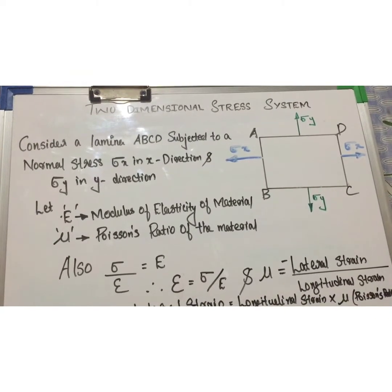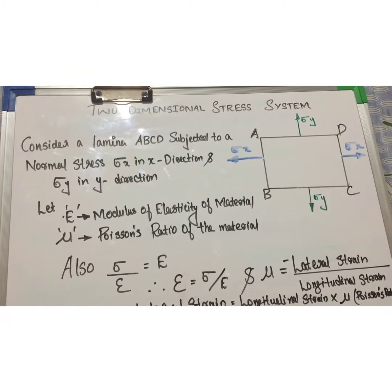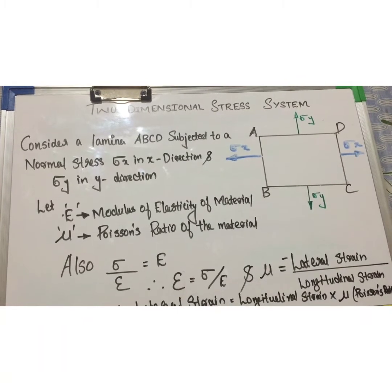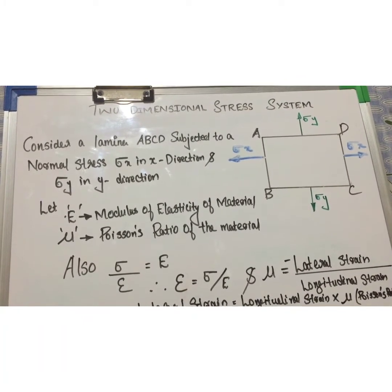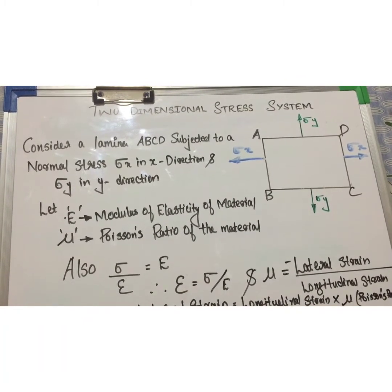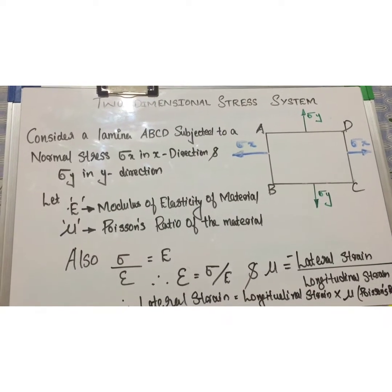Let E be the modulus of elasticity of the material of the lamina. The material has modulus of elasticity E and Poisson's ratio mu.